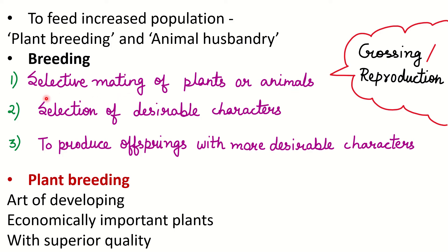Selective mating means we select and then mate or cross. What do we select? We select desirable characters. For example, with mangoes, if one tree has a fleshy fruit and another has a sweet fruit, we can cross them. So it is the selection of desirable characters to produce offspring with more desirable characters.